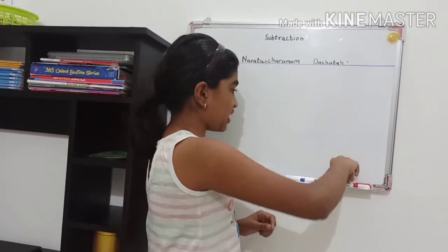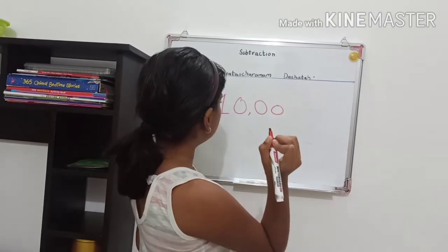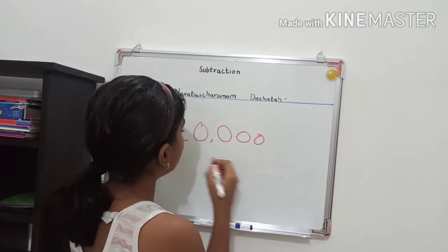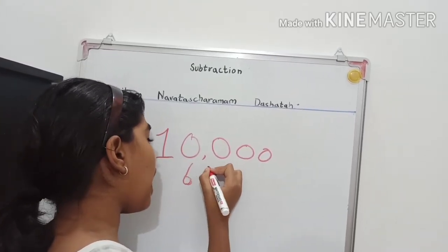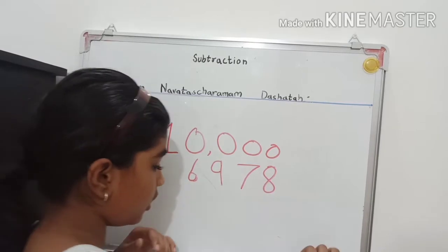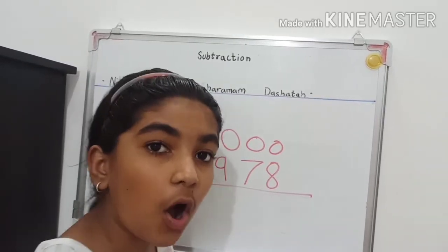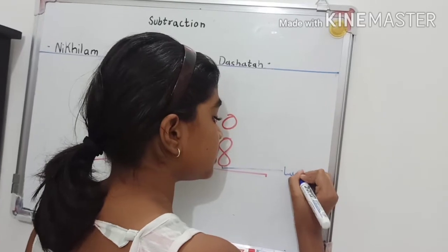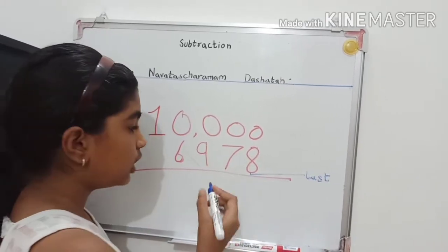Now let's take a bigger example. Let's take 10,000 minus 6978. We start the process by identifying the 'all' numbers and the last number. Remember, the last digit is the rightmost one, and all the digits to its left are the 'all' numbers.